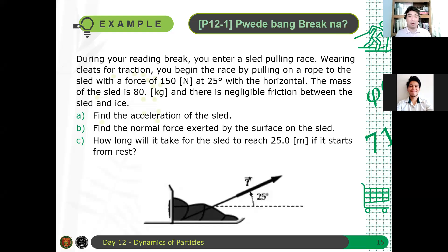Now, let's have an example. During your reading break next week, you enter a sled pulling race. Wearing cleats for traction, you begin the race by pulling on a rope attached to the sled with a force of 150 N at 25 degrees with the horizontal.